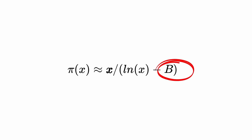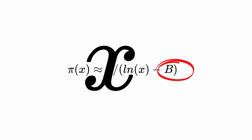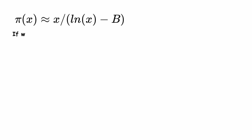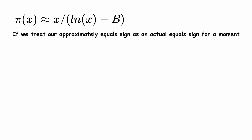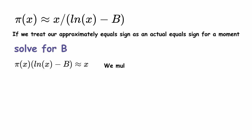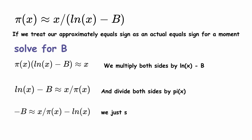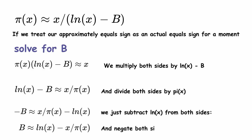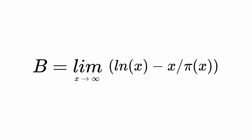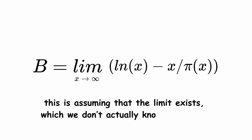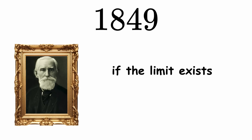Stated more precisely, they wanted to choose a value for b so that, as x grows larger and larger, the ratio between the function and the approximation approaches 1. Taking the approximate equality and treating the approximately-equals sign as an actual equals sign, we can manipulate the statement using algebra and solve for b. We multiply both sides by natural log of x minus b, divide both sides by pi of x, subtract natural log of x from both sides, and negate both sides. To make this an actual equality, we take the limit on the right as x approaches infinity. In 1849, Pafnuty Chebyshev proved that if the limit exists, then it must be equal to 1.